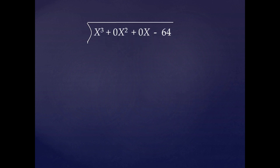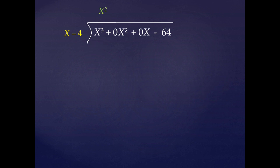Now we have to divide this polynomial. So we write x³ + 0x² + 0x - 64 inside the division sign, and x - 4 outside the division sign. Now we compare the first terms of dividend and divisor, i.e. x³ and x. If we multiply x by x², we will get x³, so in the quotient we write x². We then multiply both terms x and -4 by x² to get x³ - 4x².